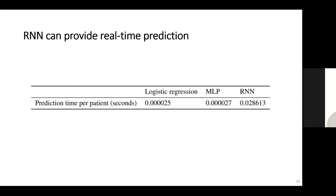In real-world applications, prediction speed is important. For a single patient, the RNN model requires only about 0.03 seconds, meaning it can predict risk for all COVID-19 patients at Columbia Medical Center within a few minutes. This demonstrates the model's viability for real-time prediction.